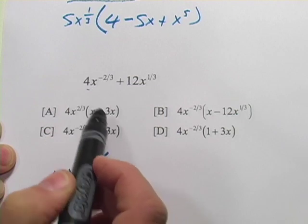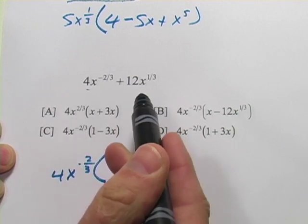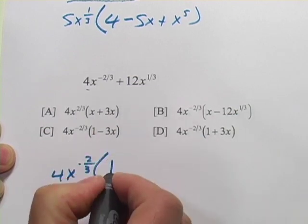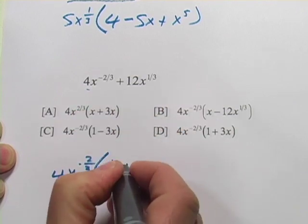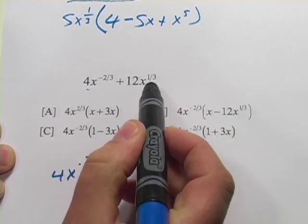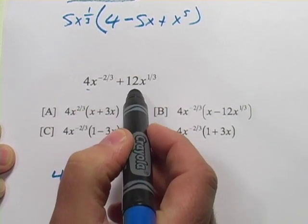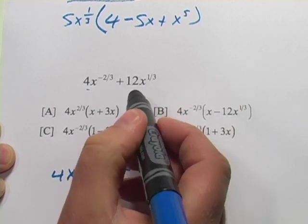And if, of course, this first term, if we divide this by 4x to the negative 2/3, you're just left with 1. Then the next thing is positive. And now the 12x to the 1/3. Well, let's do the 12 part. That's easy. 12 divided by 4 is 3.